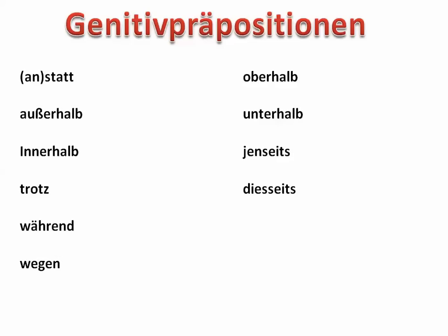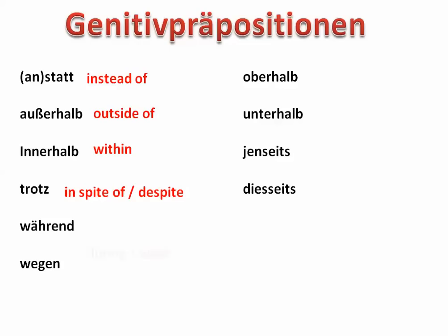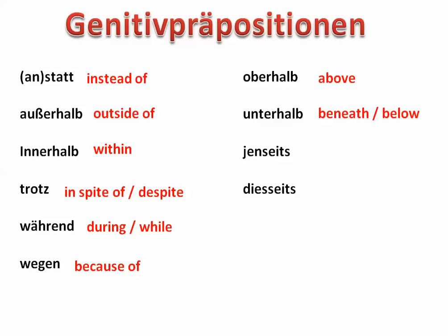Just like there are prepositions that govern the accusative and the dative, there are also prepositions that always cause the genitive. 'Statt' or 'anstatt' means instead of. 'Außerhalb' — outside of. 'Innerhalb' — within. 'Trotz' — in spite of or despite. 'Während' — during or while. 'Wegen' — because of. 'Oberhalb' — above. 'Unterhalb' — beneath. 'Jenseits' — the other side of. 'Und diesseits' — this side of.